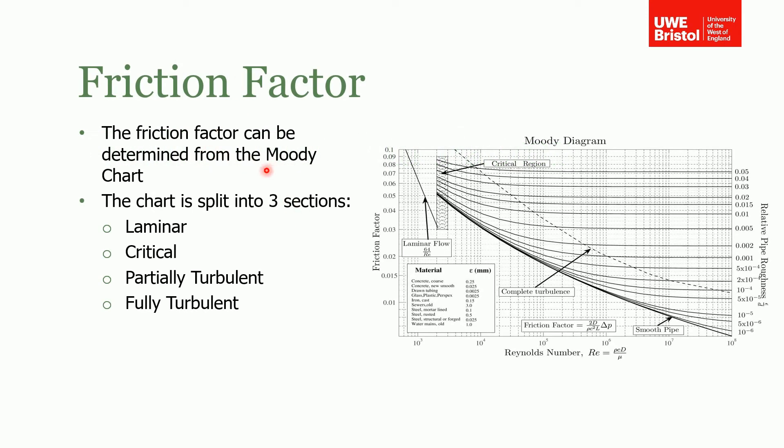The way that we do that is from something called the Moody chart or the Moody diagram, and there's an image of it shown here on the right hand side. If you remember from the Buckingham-Pi theorem, we showed that this friction factor is a function of Reynolds number, which is a non-dimensionless group, and also the relative pipe roughness, which is roughness divided by the pipe diameter. The way this chart works is you have your friction factors on the left hand side.